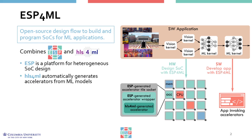We realized ESP4ML by combining two open-source projects, ESP and HLS4ML, into a new fully-automated design flow. ESP is our platform for designing and programming heterogeneous SOCs. HLS4ML is a compiler that automatically generates accelerators starting from machine learning models developed with common libraries like Keras, PyTorch, or ONNX.